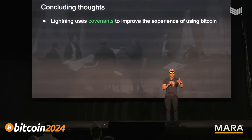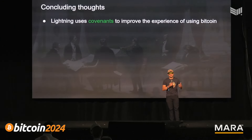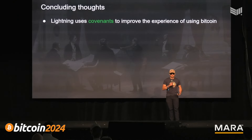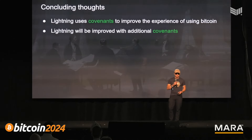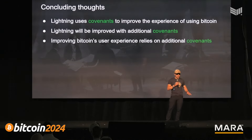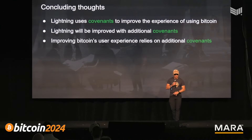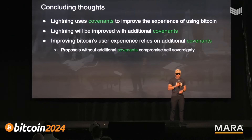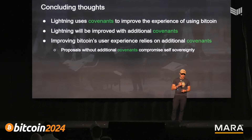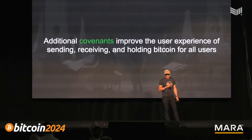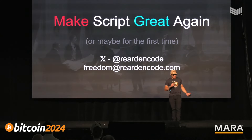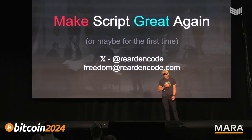Lightning uses covenants, and lightning made using Bitcoin better. Many of us remember trying to send on-chain transactions during the fork wars spam attacks — having lightning really made that experience much better: predictable spending, very low fees, very quick. We're going to keep improving the lightning network by adding additional covenants. The ways that people are talking about improving Bitcoin without additional covenants compromise on the self-sovereignty that is so important to all of us. Additional covenants improve the user experience for everyone in sending, receiving, and holding Bitcoin — and we're going to make script great again, or maybe for the first time.